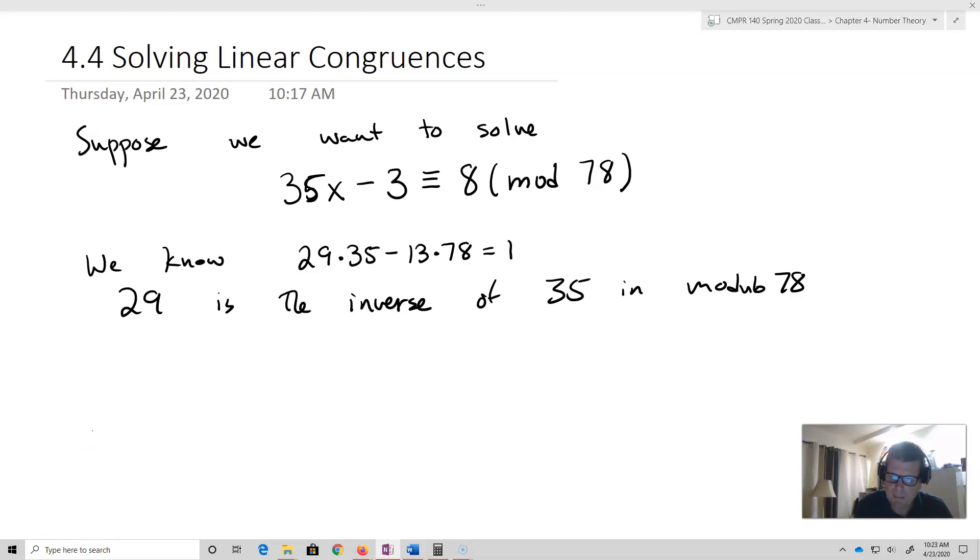Okay, so now I'm going to start my process. So I have 35x minus 3. I'm going to add 3 to both sides. So I'm going to end up with 35x is equivalent to 11 mod 78.